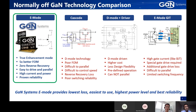Thirdly, GAN Systems has its own unique IP and knowledge to design high-current, high-power GaN devices with good performance and good yield. GAN Systems is probably the only supplier in the market who can reliably produce very high current die. Today we have 60-amp, 25-milliohm products in production, and we have also demonstrated we can produce GaN devices above 100 amps.